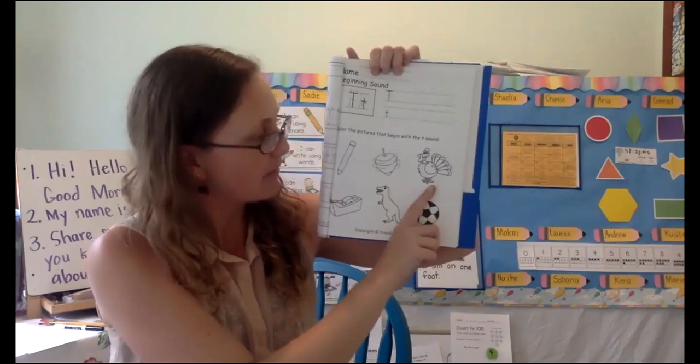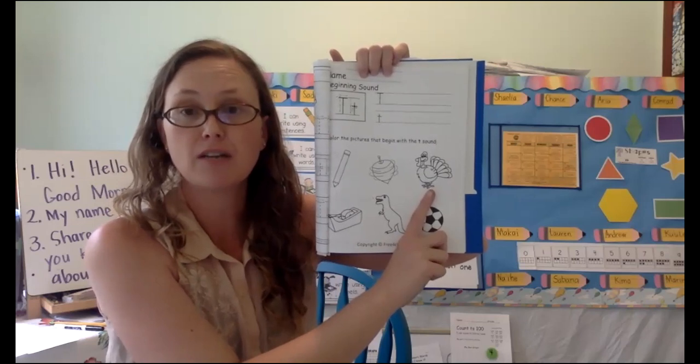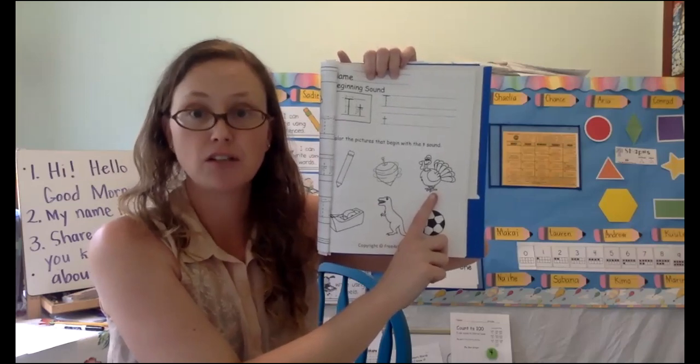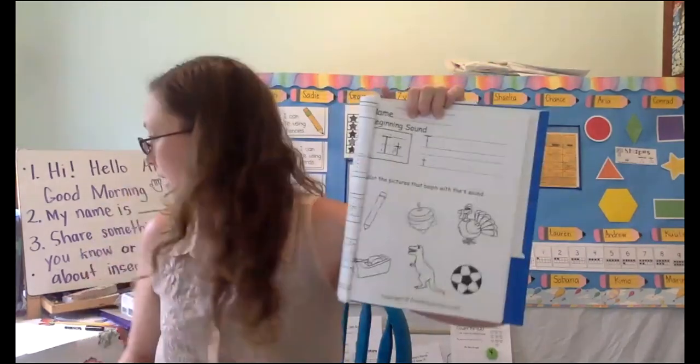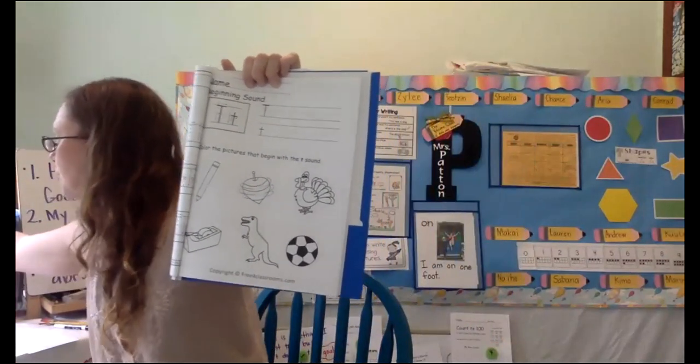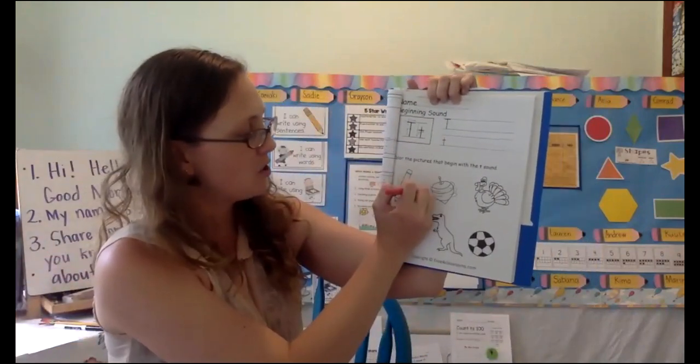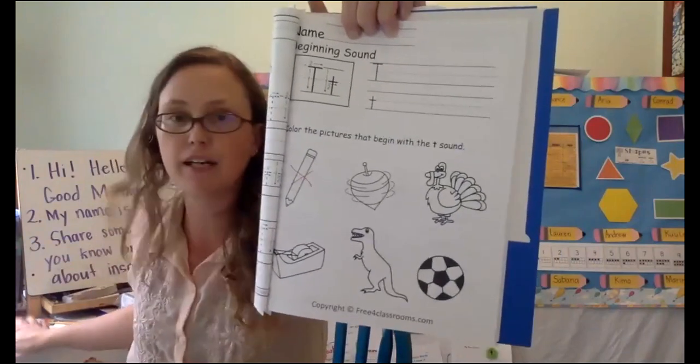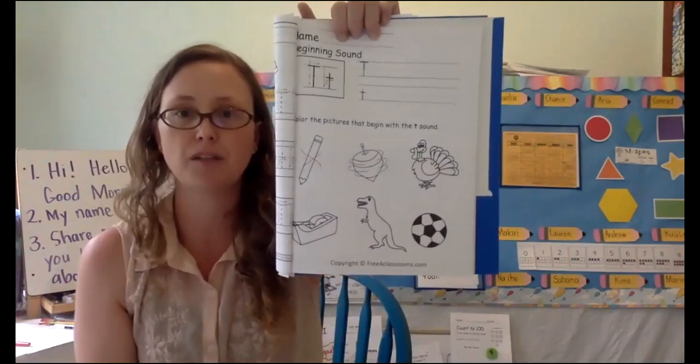The next one we have here is a turkey. What's the first sound in turkey? T, t. So that's another one that we can color. Maybe to help us remember this, we'll get out your red crayon and do the same if you would like to with me. But this one did not start with the t sound. So I'm putting a red X on it. So no, not to color it. But top and turkey do start with the t sound.